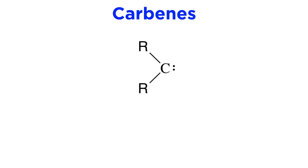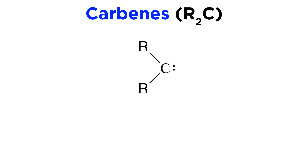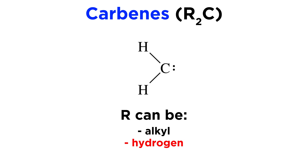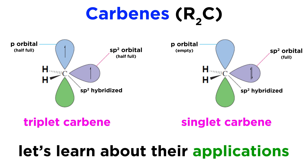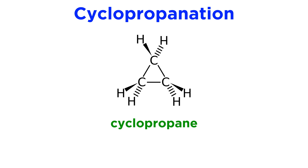In the previous tutorial, we learned about carbenes, which are a fascinating electron-deficient carbon species containing two non-bonding electrons. The general formula for a carbene is R₂C, where R can be alkyl or hydrogen, such as with the methylene carbene, although in some cases it can represent other substituents. After learning about the geometry of carbenes and other properties, it's time to talk about what we can do with them. One of the most important applications of carbenes, which we alluded to in the previous tutorial, is cyclopropane synthesis, or cyclopropanation.